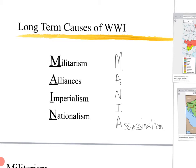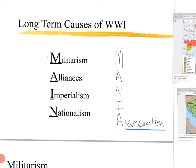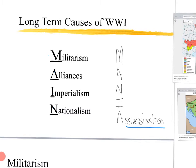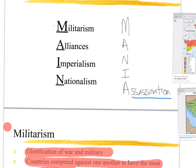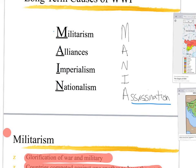The other way you can remember it is that it spells MANIA, because the addition there is going to be the short-term cause, which is the assassination. There's an assassination that will take place, which I'll talk about in a minute. But the long-term causes — the easy way to remember is MAIN. What are the MAIN causes of World War I? That's militarism, alliance, imperialism, and nationalism. We have our own little acrostic right here to help us remember.